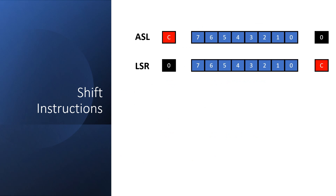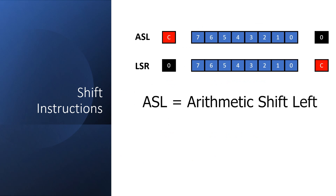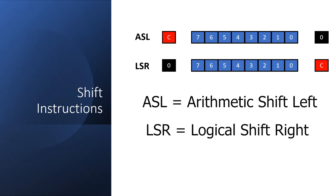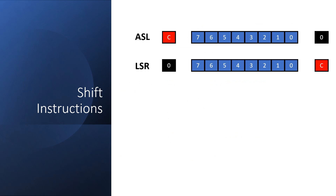Now I want to talk about the shift instructions on the 6502. For some reason they're called arithmetic shift left and logical shift right. Arithmetic shift left means that each bit is shifted one position to the left — bit 7 goes into carry, bit 6 goes into 7, 5 goes into 6, and so forth, all the way down to bit 0 which goes into bit 1. We need to fill bit 0, and with ASL we put a 0 into bit 0.